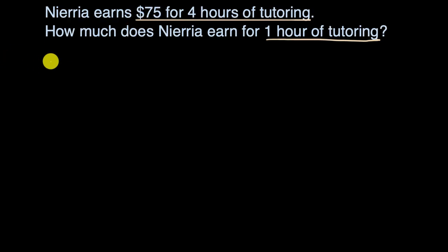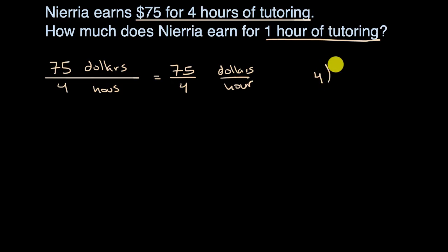Another way you could think about it, you could say Nieria gets $75 for every four hours, which is another way of saying that Nieria is going to earn 75 divided by four dollars per hour. So really we just have to figure out what 75 divided by four is. So let's do a little bit of long division.